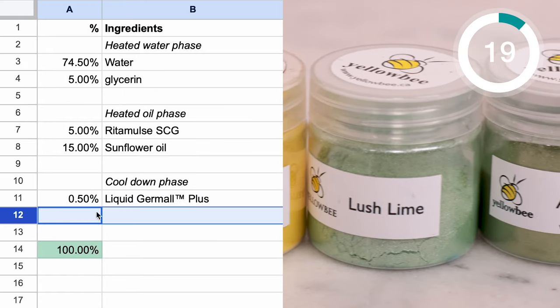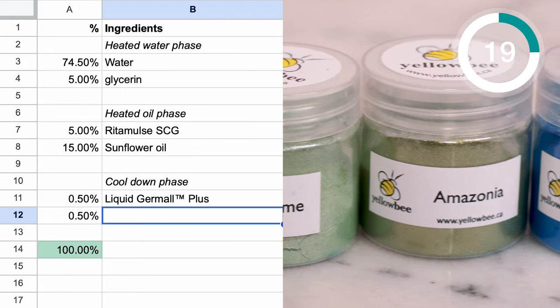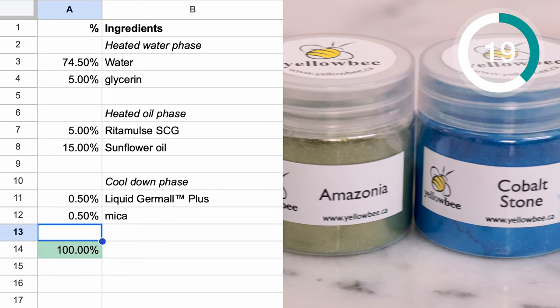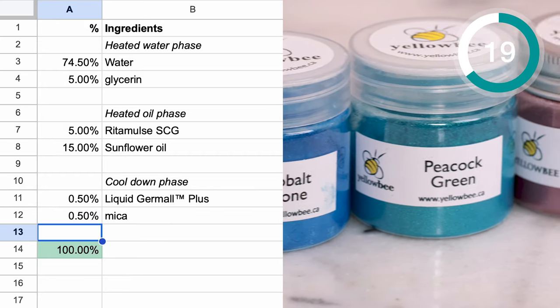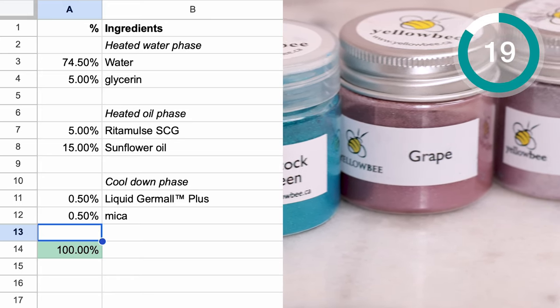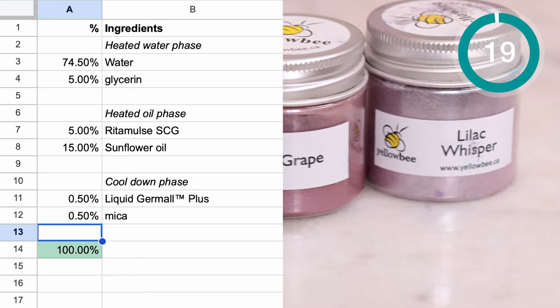To easily add some colour to your DIY, incorporate 0.5% of a coloured mica into the cool-down phase, reducing the distilled water to make room for it. There are other ways to add colour to emulsions, but micas are really easy and there are tons of options.